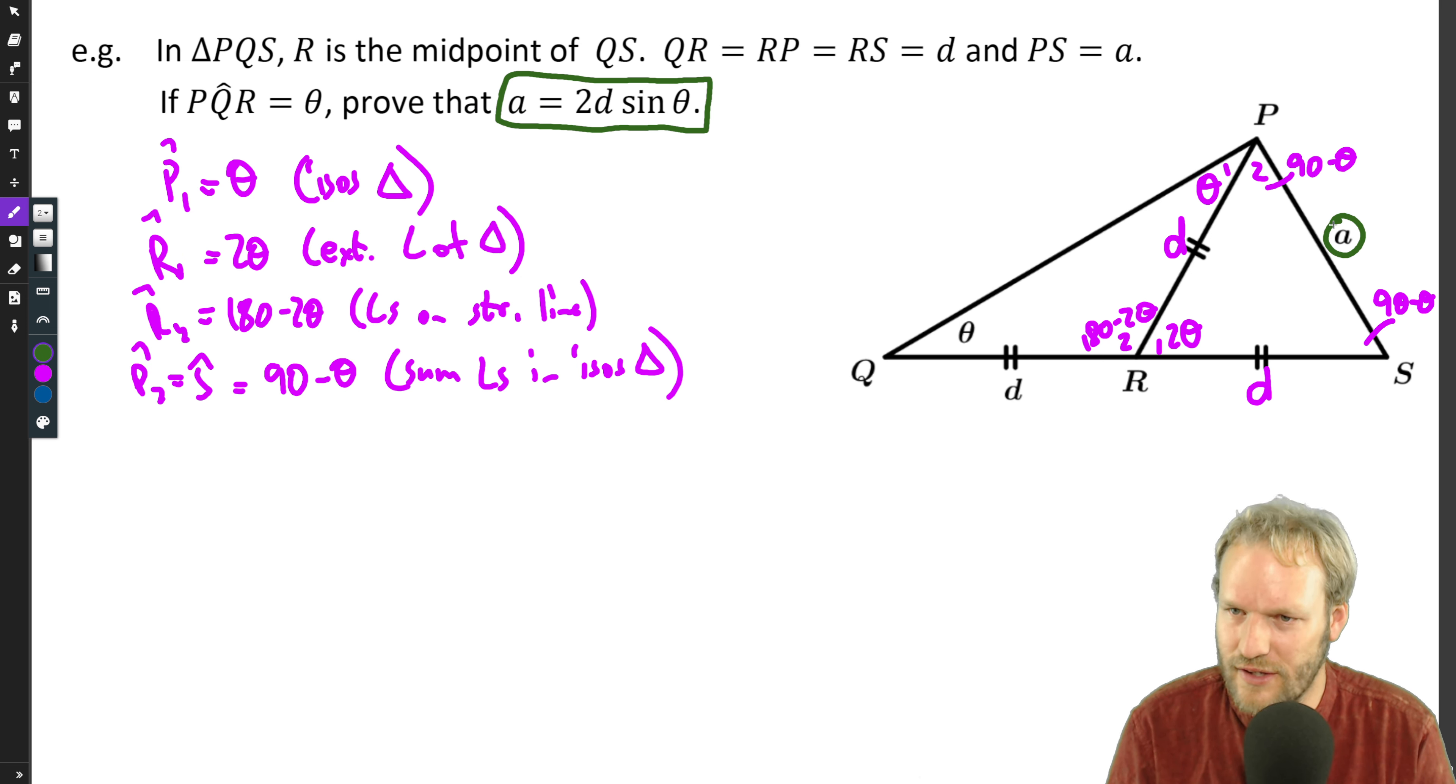Okay, well here's an a over here, and we've got the angle that's opposite. Oh, sine rule is jumping out. Oh look, here's an angle that we know and the side opposite. So using our sine rule in triangle PRS, the thing that we're kind of trying to find is a, so a over sine the angle opposite it, 2 theta, equals d over sine, and that angle there is 90 minus theta.